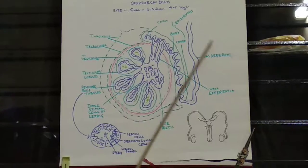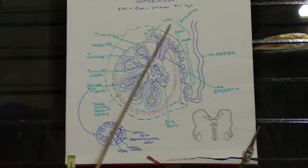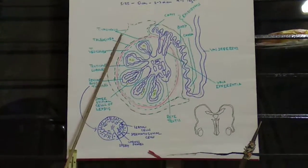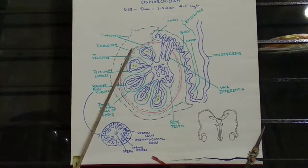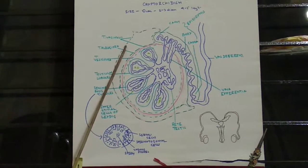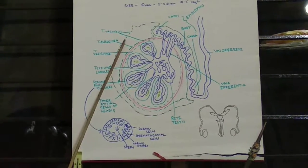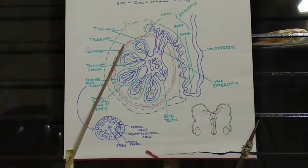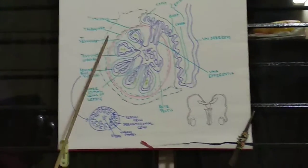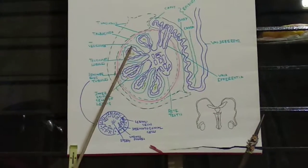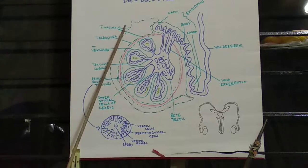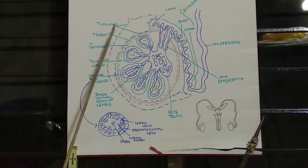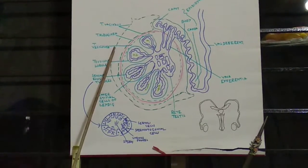Looking at the detailed structure of the testes, the outer covering consists of three layers. The outermost is the tunica vaginalis, next is the tunica albuginea, and the third is the tunica vasculosa.